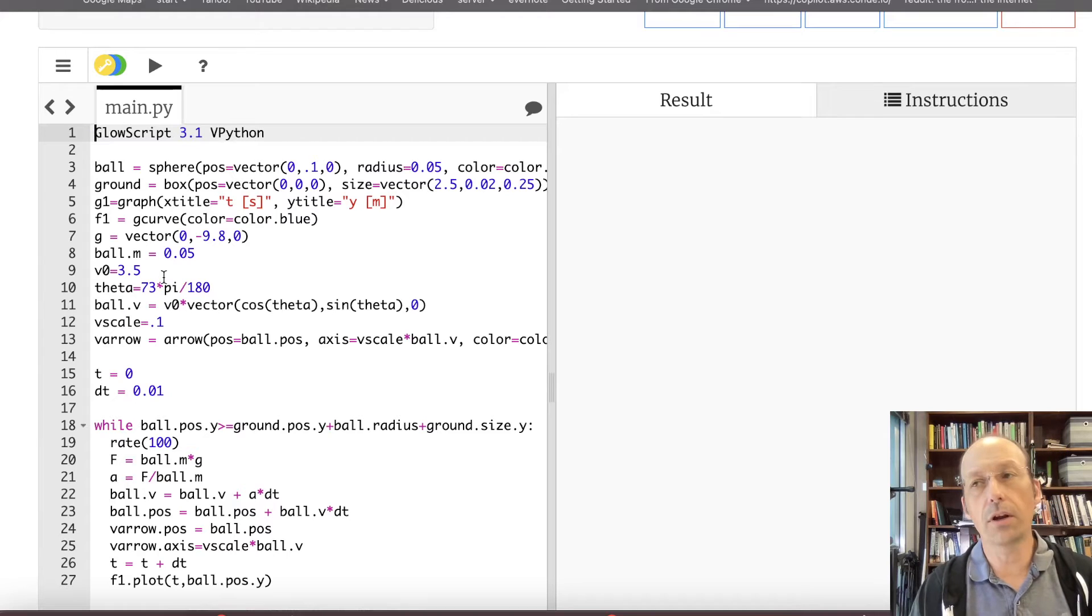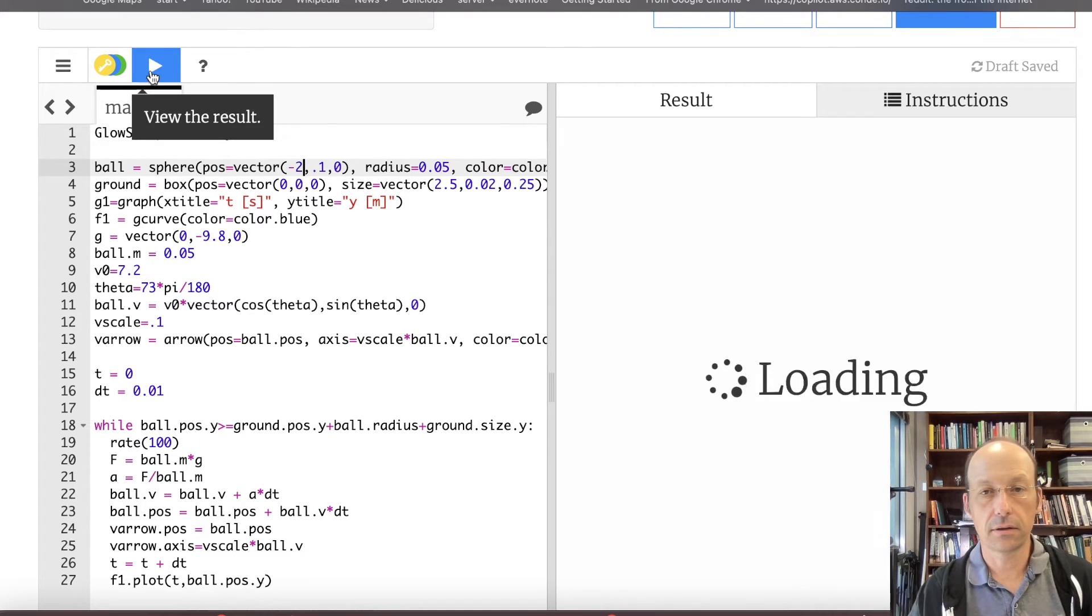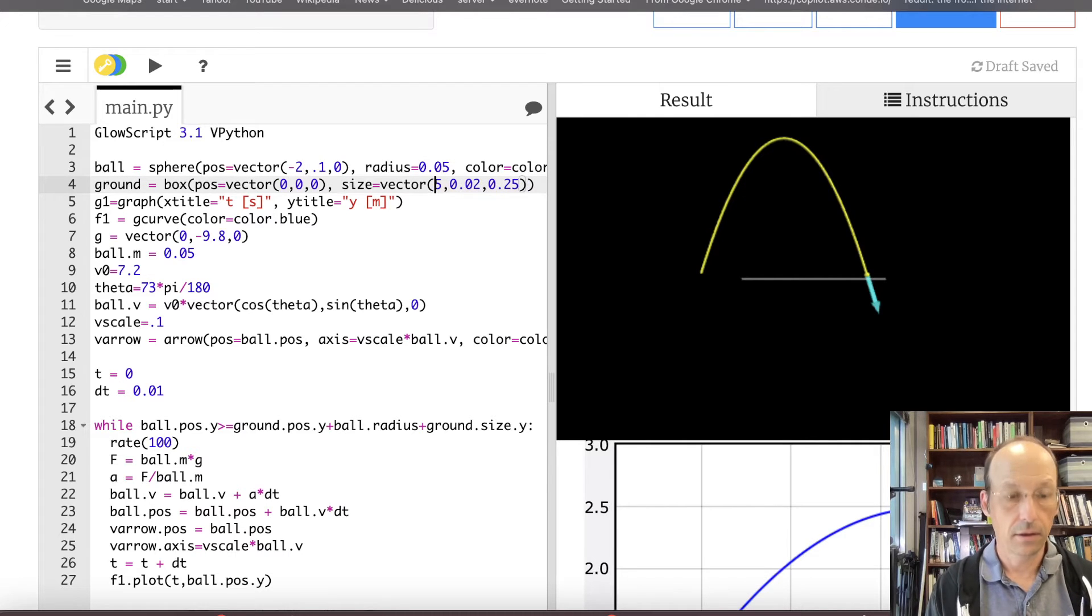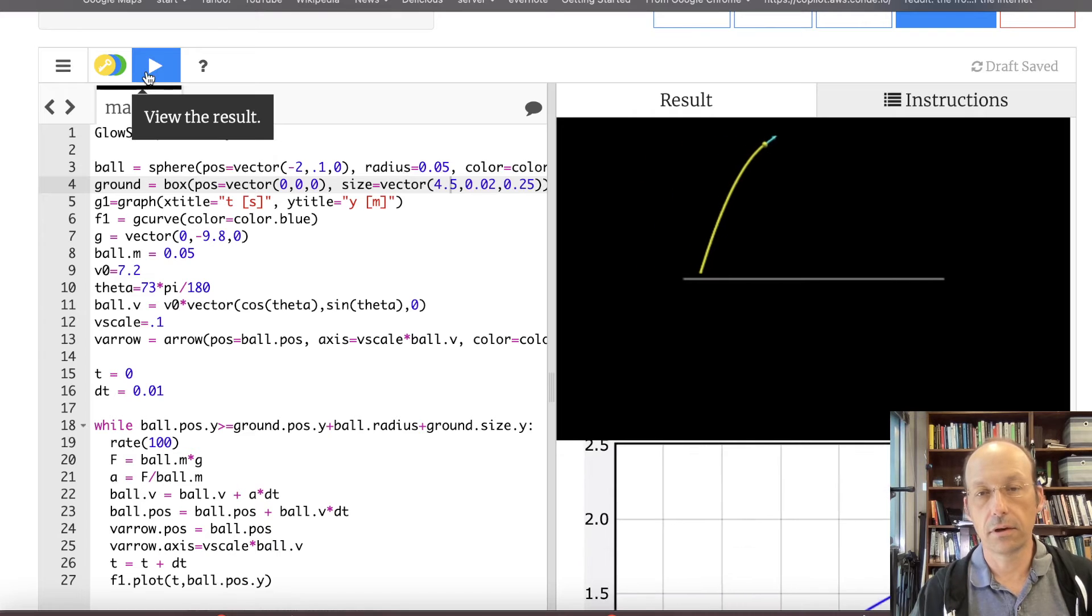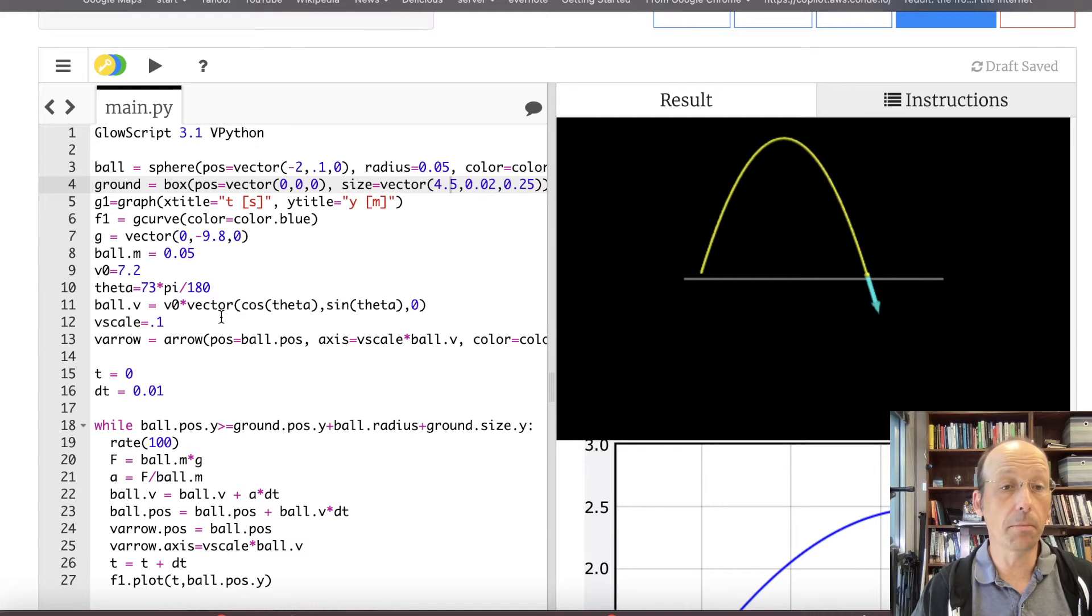The first thing I want to do is throw this a lot faster. So let's give this a velocity of 7.2. I completely made that up. And I'm going to move the ball. So I have my ground at 2.5 meters. Let's put this at negative 2.2 in the x direction. I need to make my ground a little bit bigger. Let's make this 4.5.